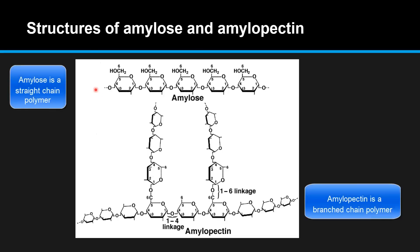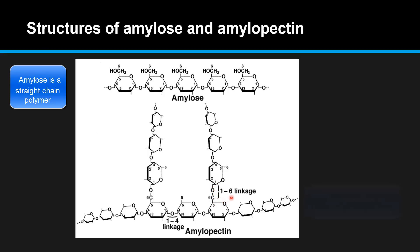Here we can compare the structures of amylose at the top and amylopectin at the bottom. Amylose is a straight chain polymer because it has those alpha 1,4 glycosidic links. Amylopectin on the other hand is a branched chain polymer because it has those 1,4 alpha glycosidic links and also the 1,6 alpha glycosidic links, which makes it a branched polymer.